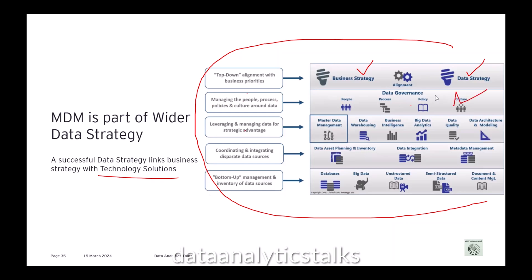Then there is leveraging and managing data for strategic advantages, whereby we have master data management, data warehousing, business intelligence, big data analytics, data quality, and data architecture and modeling. Then coordinating and integrating spread data sources where we have data set planning and inventory, data integration, and metadata management. Then we have management and inventory of data sources, databases, big data, unstructured and semi-structured, and document and content management. Within these, master data management is a part of the data strategy — it doesn't stand alone.